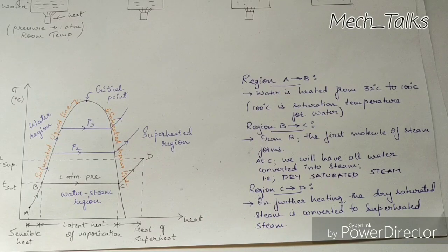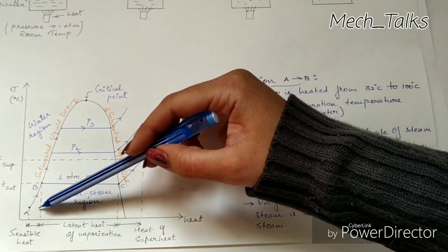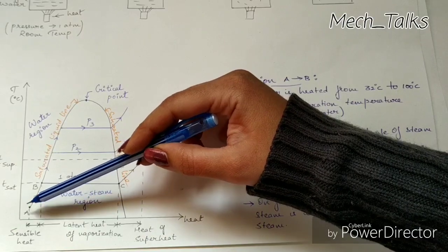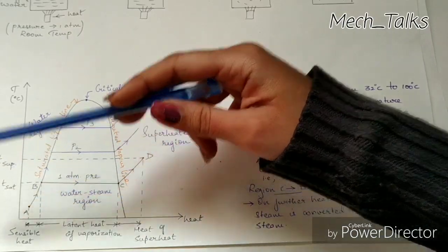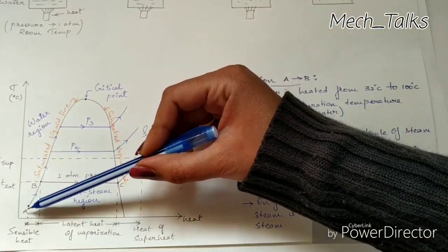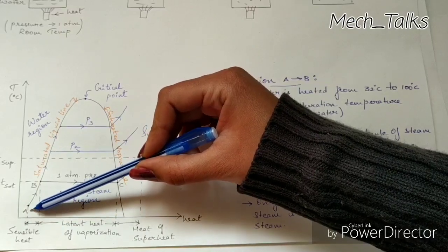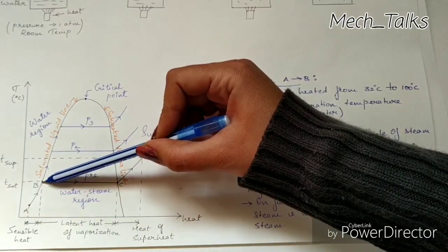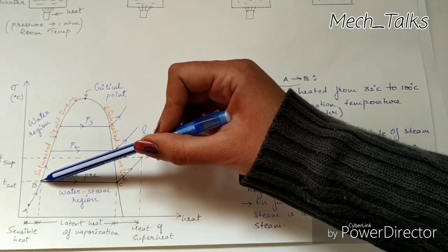Let us understand this topic further with the help of a temperature vs. heat diagram. As shown in the figure, let us start from point A, which shows the initial conditions of water: 32 degree centigrade temperature and 1 atmospheric pressure. Point B indicates 100 degree centigrade temperature, that is the saturation temperature of water.